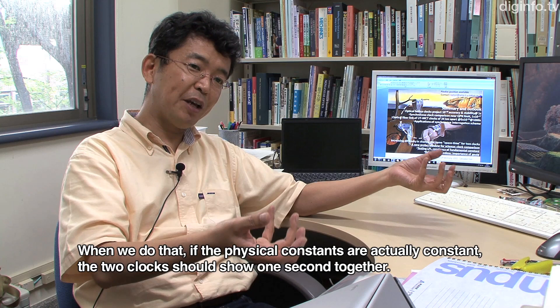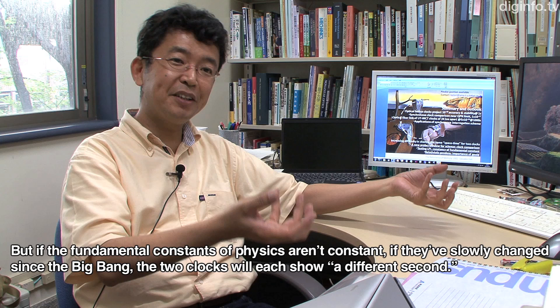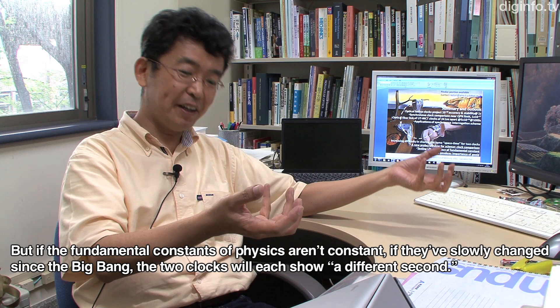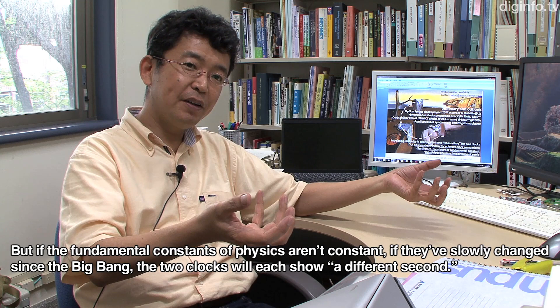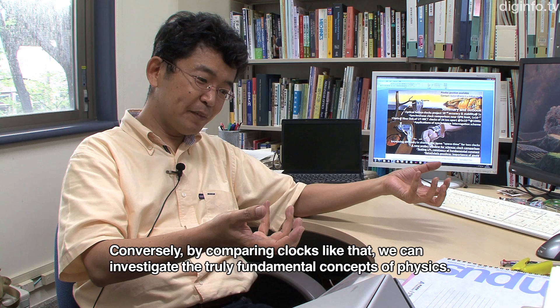We believe we can create one second with atomic clocks. But if we make very high-performance clocks using different atoms and compare the one second ticked by this atom with one second ticked by another atom, if the fundamental constants of physics are truly constant, the two clocks should tick the same one second. However, if the fundamental constants aren't constant and have been changing since the Big Bang, the two clocks would tick different seconds. By comparing such clocks, we can conversely investigate the truly fundamental aspects of physics.